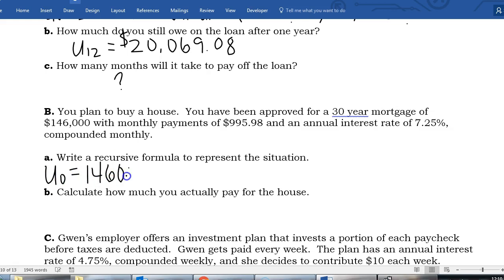I'm going to write my general term. We're always going to start with our un equals u sub n minus one and then in my parentheses one plus, because we are adding interest to our balance before we make our payments. We have a 7.25 percent rate, converting that into a decimal I have 0.0725. We're compounding monthly so I'm going to divide by 12, and then we're making monthly payments of $995.98 so we're going to subtract from our balance our payment amount. So I don't actually ask you to use this to calculate a value, I just want to make sure we can write the formula.